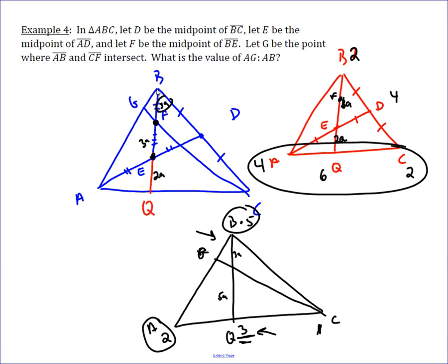Which is this segment right here, to GB, to AB, which is the entire segment. Well, this segment is going to be 5 to 2, AG to GB, which means AG to AB is just going to be 5 to 7.